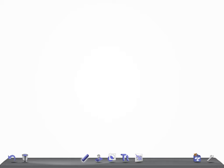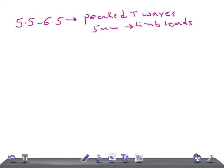Let's make a beautiful table. If the serum level is 5.5 to 6.5, what are the expected EKG changes we see? There will be peaked T-waves. The peaked T-waves are defined as greater than 5 mm in limb leads.